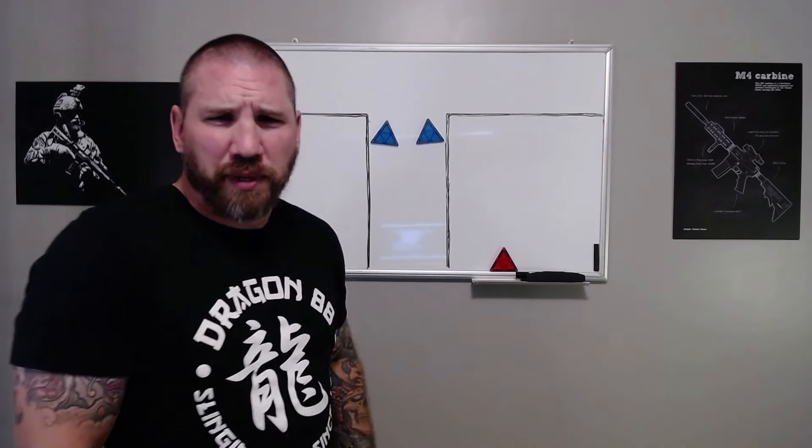So that's the quick down and dirty of how to clear T-intersections as a one-man or two-man element. Thanks for watching.